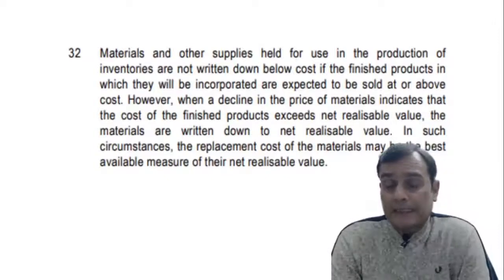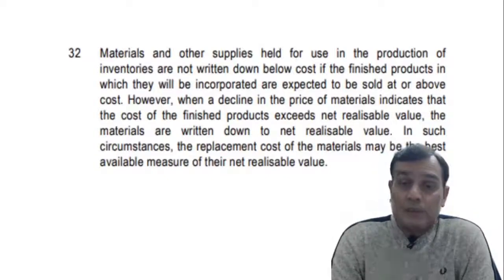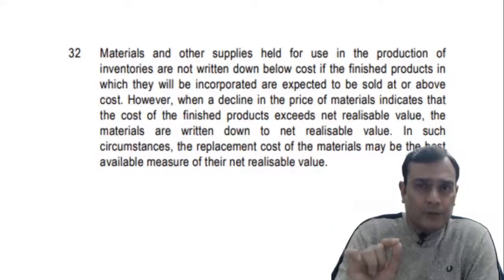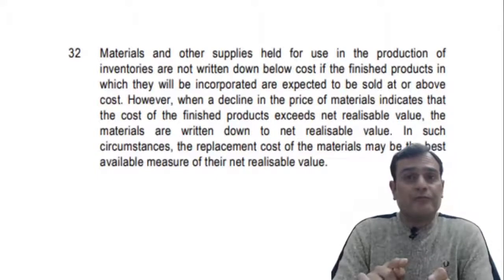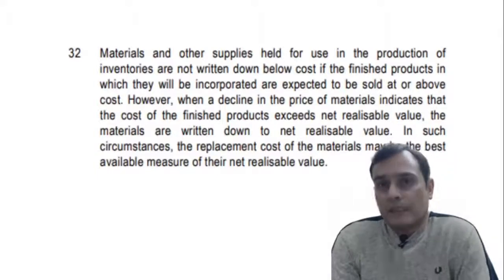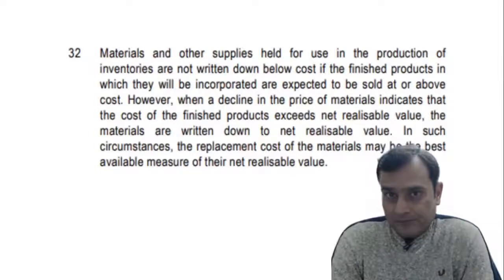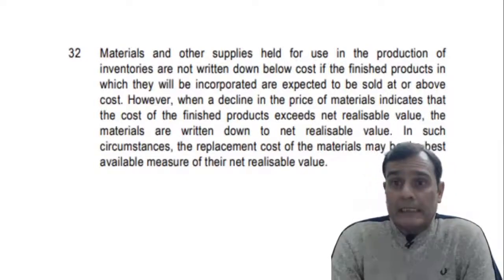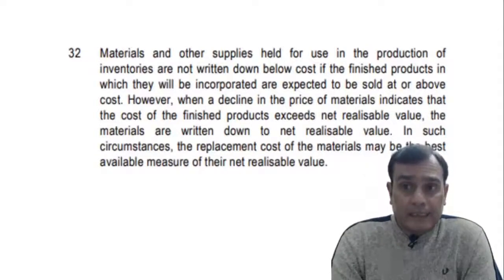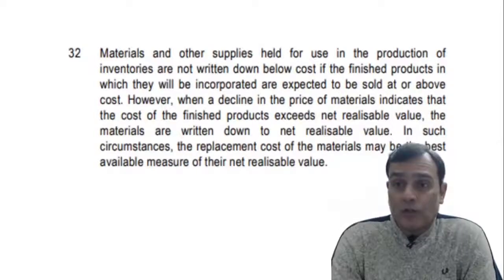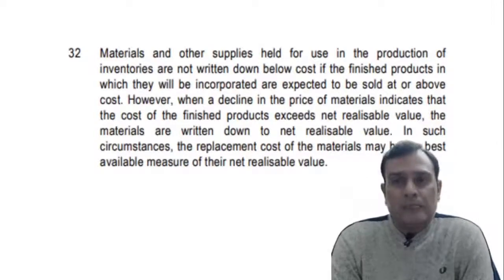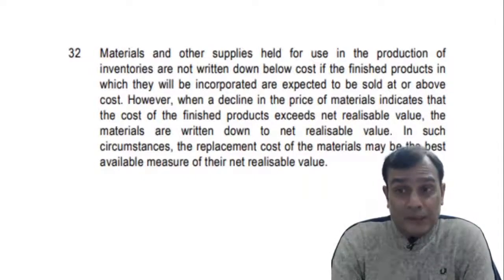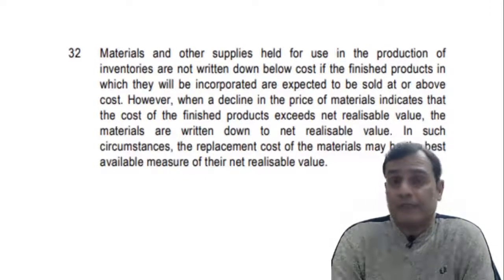So when it comes to raw material held for use in production, we first look at the finished goods valuation. If the finished goods is valued at cost, the raw material is also going to be valued at cost. However, when the decline in the price of the material indicates that the cost of finished goods exceeds NRV, the materials are written down to NRV. In such circumstances, the replacement cost is the best available measure of NRV.